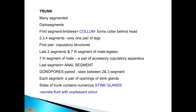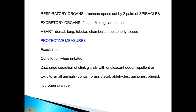Each segment contains a pair of openings of sting glands, and the sides of the trunk contain numerous sting glands that secrete a fluid with an unpleasant odor. The respiratory organs are tracheae opening to the outside through two pairs of spiracles. The excretory organs are two pairs of Malpighian tubules. The heart is dorsal, long, tubular, chambered, and posteriorly closed.